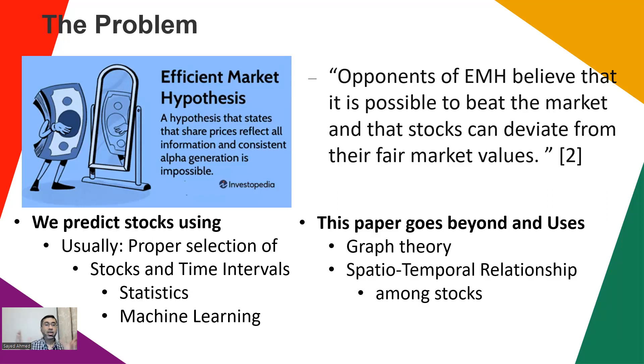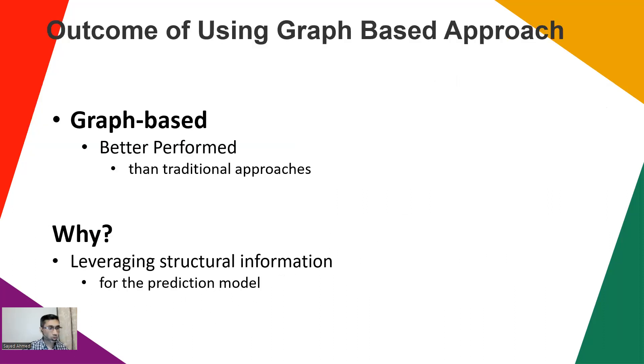They utilize those things and then predict the stock prices. What is the outcome? Yes, they found better prediction accuracy. Why? Because they considered the structural information, spatial information that helped them achieve this.